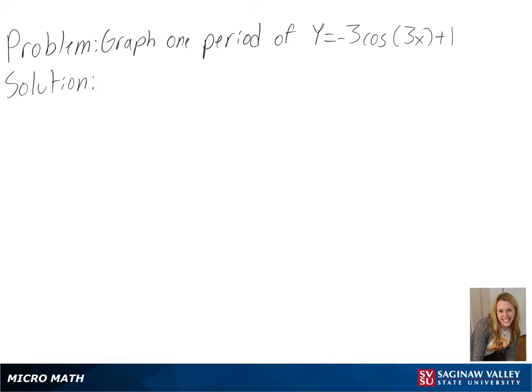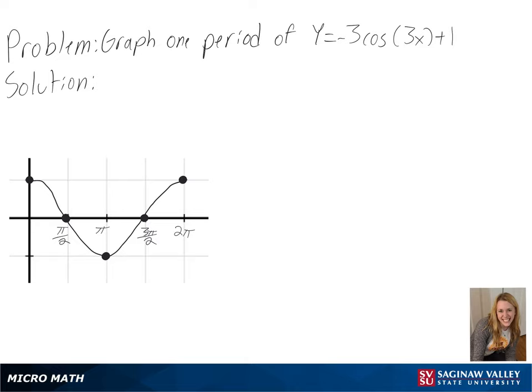Our problem is to graph one period of y equals negative 3 cosine of 3x plus 1. We can look at an original graph of y equals cosine of x to see how ours will be changing.